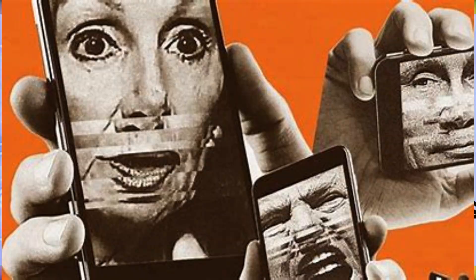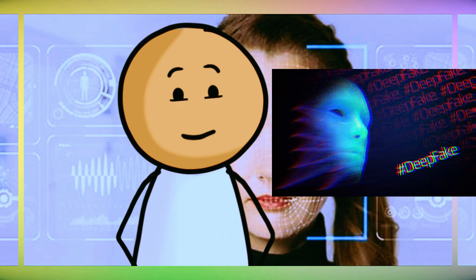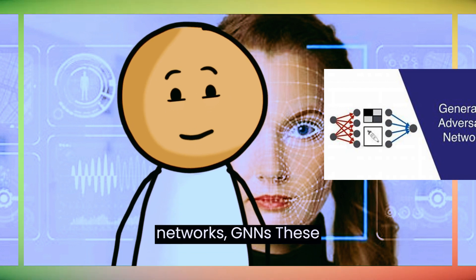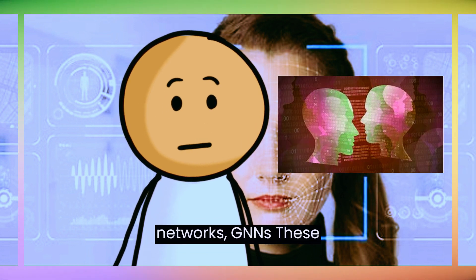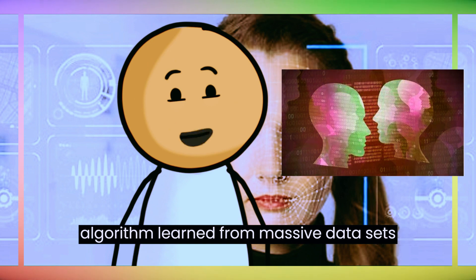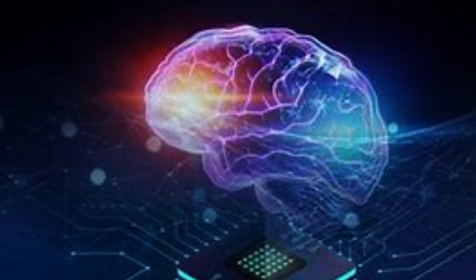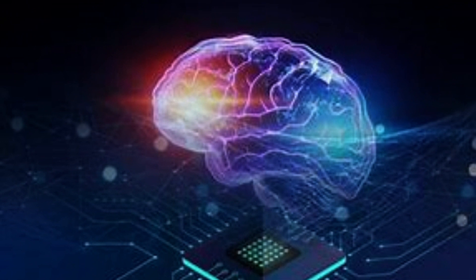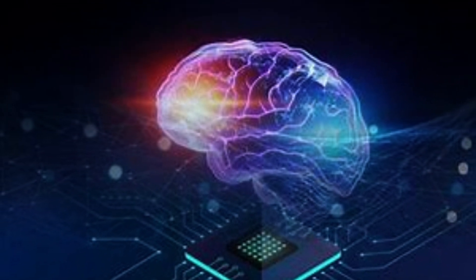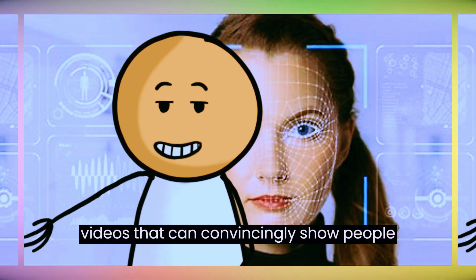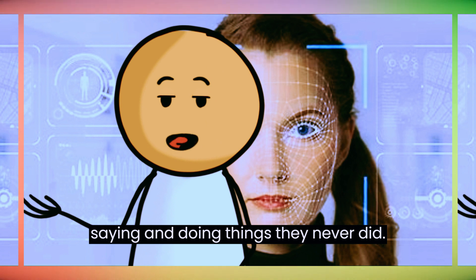To demystify the tech behind the trickery, deepfakes use advanced machine learning algorithms, particularly Generative Adversarial Networks (GANs). These algorithms learn from massive datasets to create hyper-realistic synthetic content. The result: videos that can convincingly show people saying and doing things they never did.